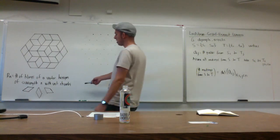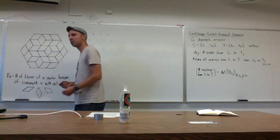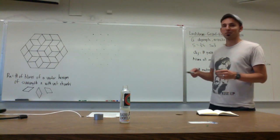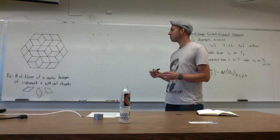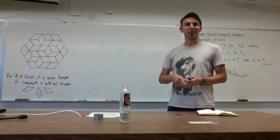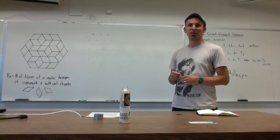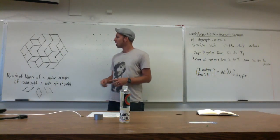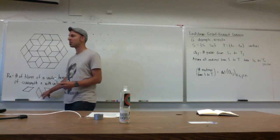The number of tilings of a regular hexagon of side length n with unit rhombi — these rhombi all have angles of 60 and 120 degrees. Some of you walking in said it looks like a staircase. It does have a three-dimensional quality, and it's going to look more three-dimensional if I take all the vertical rhombi and shade them in.